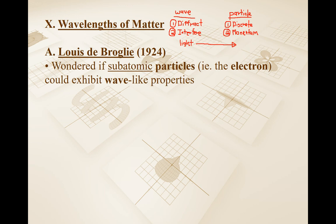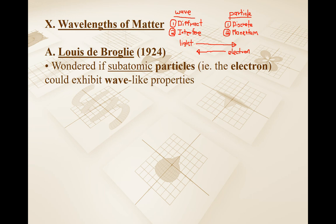What de Broglie is wondering about is the symmetry in nature. He's wondering if you can take a particle — a discrete unit like an electron — and go in the reverse direction. Is it possible for an electron to diffract, meaning it would spread out through a slit, and then in some capacity interfere? That doesn't seem very likely, but we're going to examine this anyway.